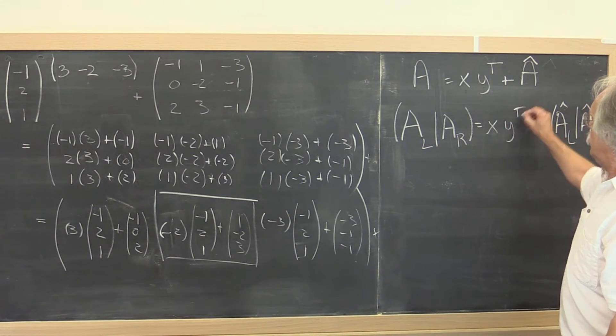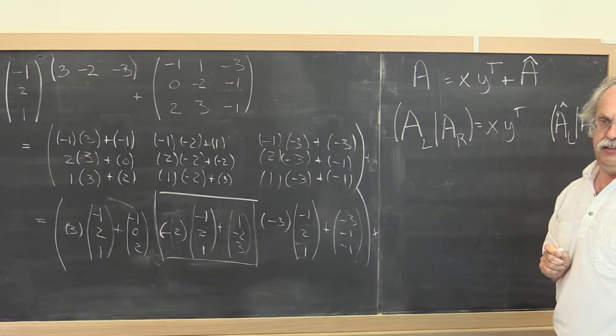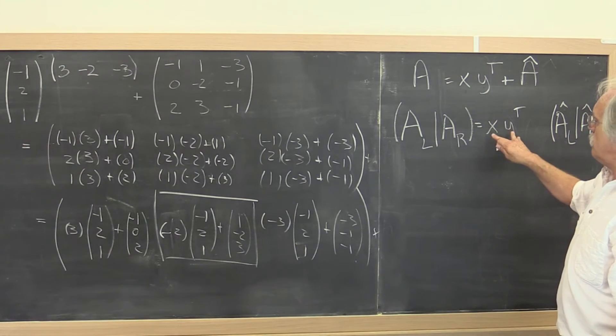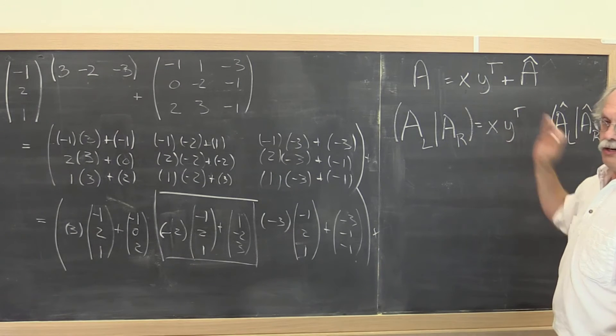Well, if we do xy transpose, we can't add them to pieces here. We want to somehow take this and partition it by columns as well.